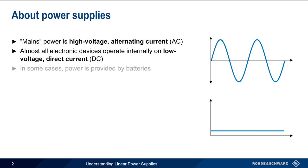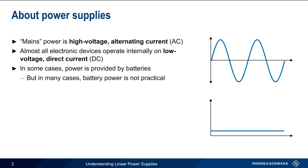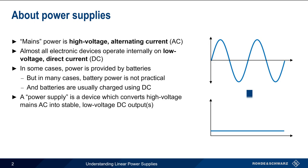Sometimes this low voltage DC can be provided by batteries, and battery power has become increasingly common for many consumer electronic devices. However, there are still many cases where battery power is not practical, and it's also worth noting that batteries themselves are charged using DC. We'll use the term power supply to refer to a device that converts high voltage AC mains voltage into one or more stable, low voltage DC outputs — in other words, a device that takes an electrical sine wave and, ideally, produces a straight line output.